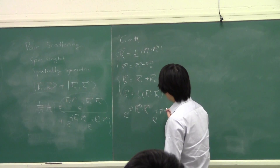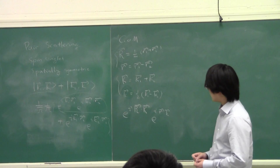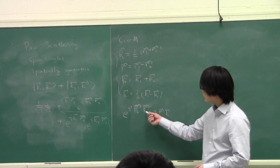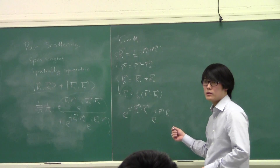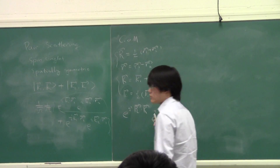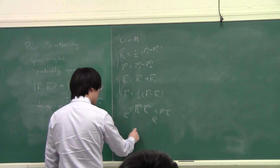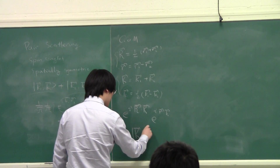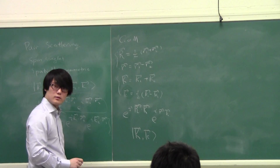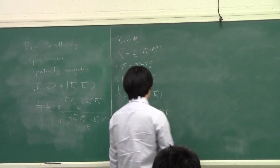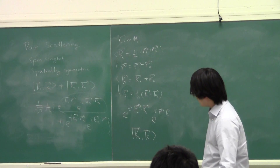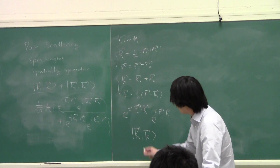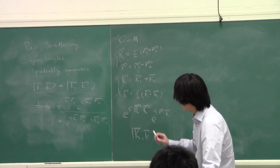So these kinds of states can be characterized by a center of mass momentum and a relative momentum. We write the two-electron states using these two momenta, and they look like |K, k⟩. If we consider states with different K1 and K2, those would be |K', k'⟩.